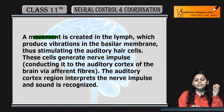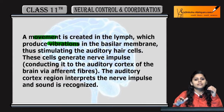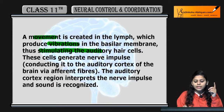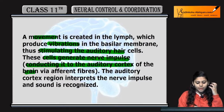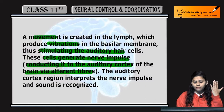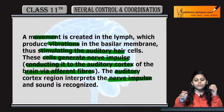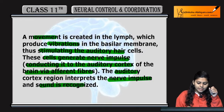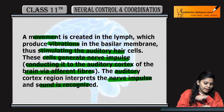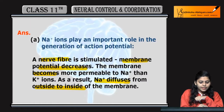The movement creates vibrations in the basilar membrane, which stimulate the auditory hair cells and generate nerve impulses. These impulses are conducted via afferent fibers to the auditory cortex of the brain. The brain interprets these nerve impulses, and the sound is recognized. This completes question number 8.